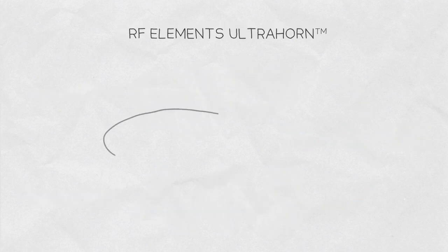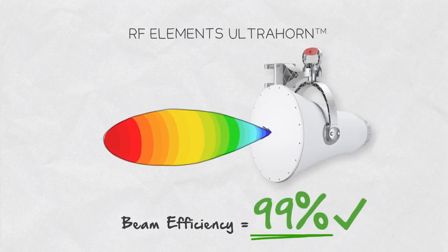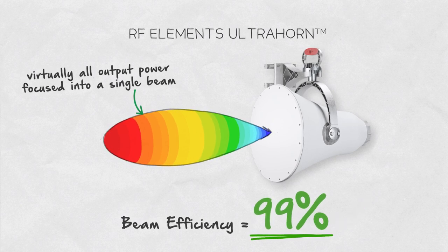Beam efficiency of the ultra horn for point-to-point links or narrow sectors is 99%, which means that virtually all the output power of a radio is focused into a single beam.